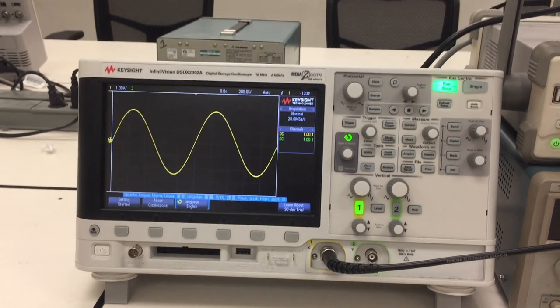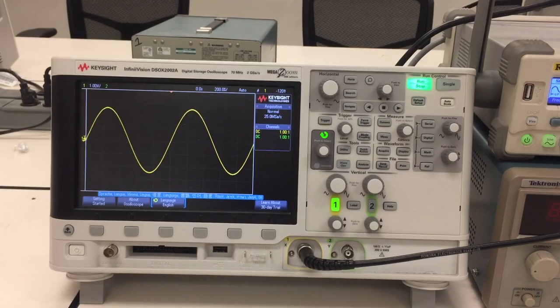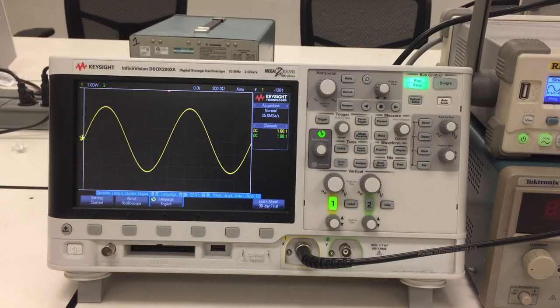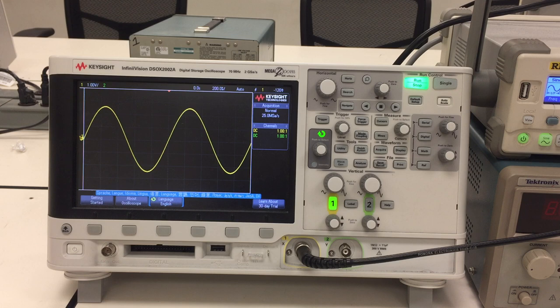So on a very high level, what the oscilloscope does for you is that it takes in this continuous sinusoidal signal and it tries to sample this continuous signal into discrete data points, discrete voltage data points with timestamps, and it's trying to reconstruct these discrete points to the waveform you can see on the screen.